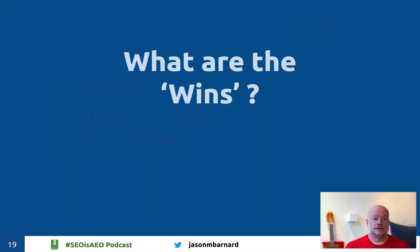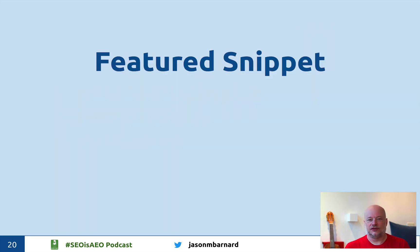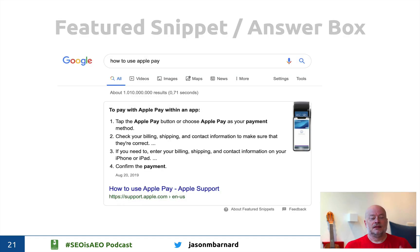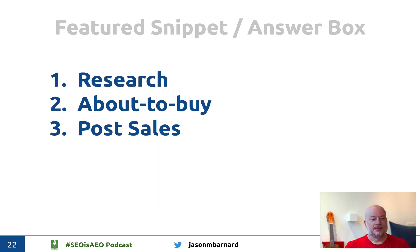What real estate are we going to get on the SERP with this technique? Number one is the featured snippet — right at the top, in the middle, front and centre. Here's Apple with a post-sales featured snippet that gets their client right to the answer straight away. These featured snippets are very good for research, about-to-buy, and post-sales, so you might want to look at all three types of FAQs with the featured snippet in mind.